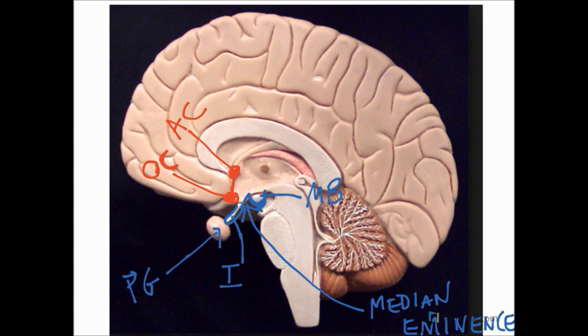The infundibulum, median eminence, and the mammary bodies together create the inferior boundary of the hypothalamus. Now up where we were with the mammary bodies, which is around here, is the most posterior point of the hypothalamus.